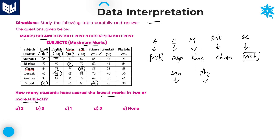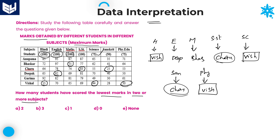In Sanskrit, lowest marks is 25, and that is Charu. Charu is also repeated twice. In Physical Education: 71, 64, 53, 50, 30 — 30 is lowest, and that is Vishal. Vishal is already repeated, now appearing in 3 subjects. Vishal got lowest marks in 3 subjects, whereas Charu got lowest marks in 2 subjects. So the required answer is 2 — Vishal and Charu scored lowest marks in 2 or more subjects. Option A is the right answer.